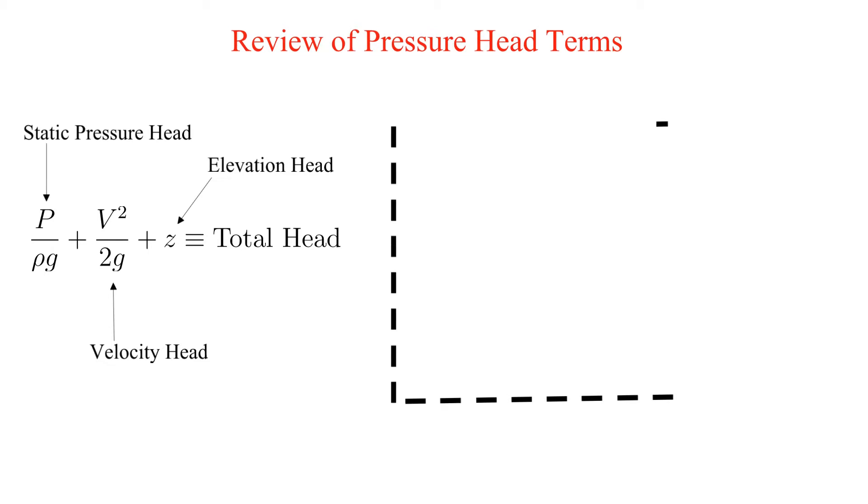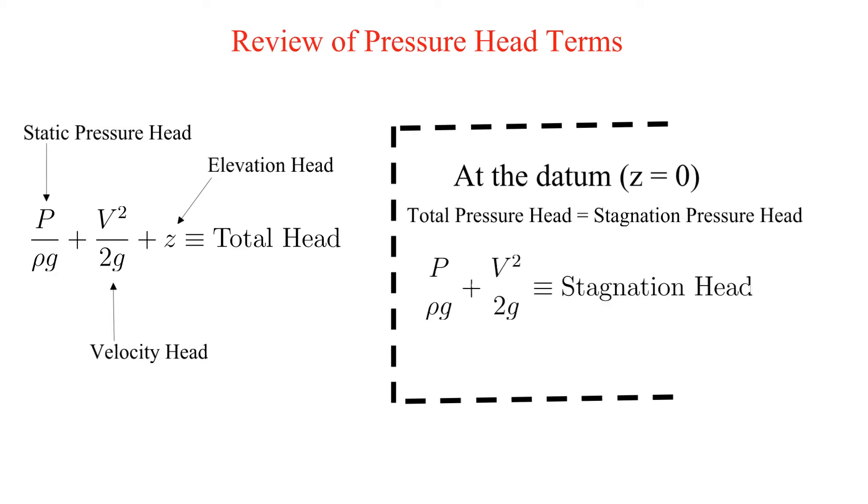Before we define net positive suction head, let's review total pressure head. Total pressure head consists of three head terms: the static pressure head, the velocity head, and the elevation head. Also note that at the defined datum, the point where z is equal to zero, the total pressure head is the same as the stagnation pressure head or just the stagnation head.